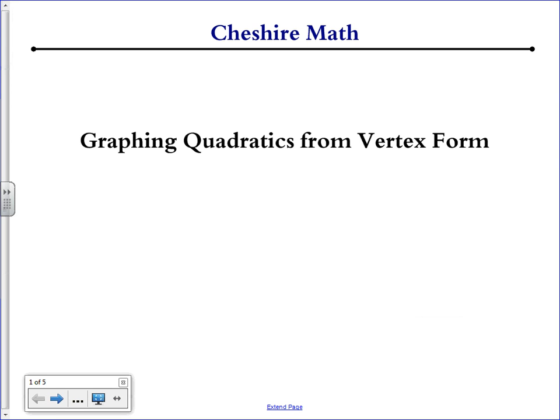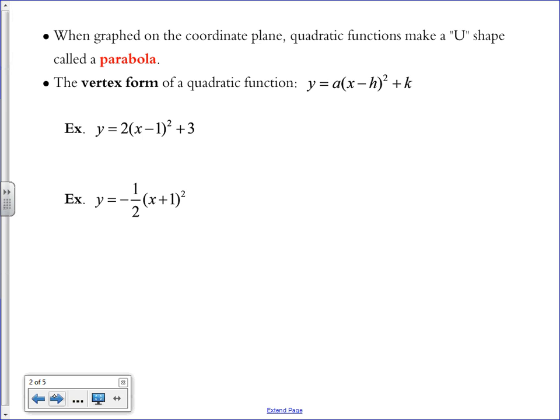This video is about graphing quadratics from vertex form. When graphing on the coordinate plane, a quadratic function makes a U-shape called a parabola. The vertex form of a quadratic function is y equals a times the quantity x minus h squared plus k.